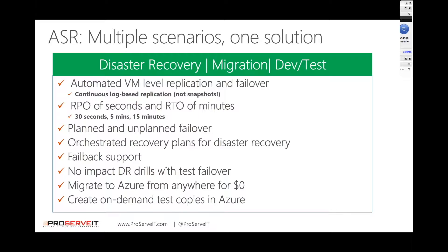Azure Site Recovery can handle and manage both planned and unplanned failovers. Sometimes you may actually want to initiate a disaster recovery process, whether as a testing scenario or some other incident — that would be a planned failover. Unplanned would be when your data center goes away. It's also important to recognize that ASR supports failback, so in the event of a disaster you can failover your servers from your on-premise environment, and once you've stabilized whatever issue is present, you're able to failback and move that infrastructure back to its original location.